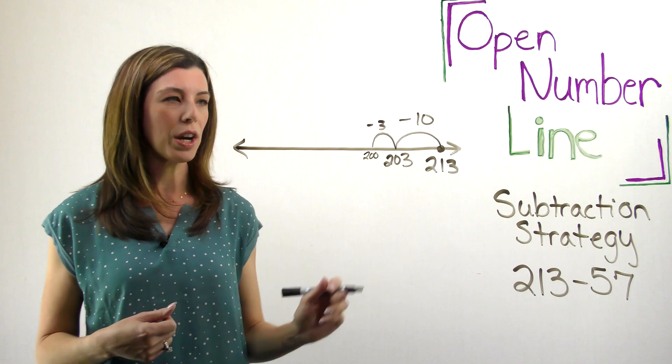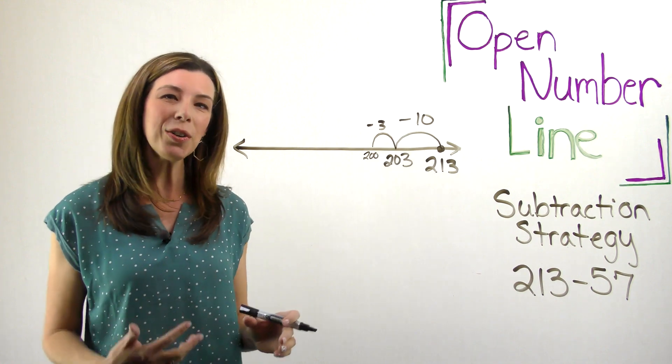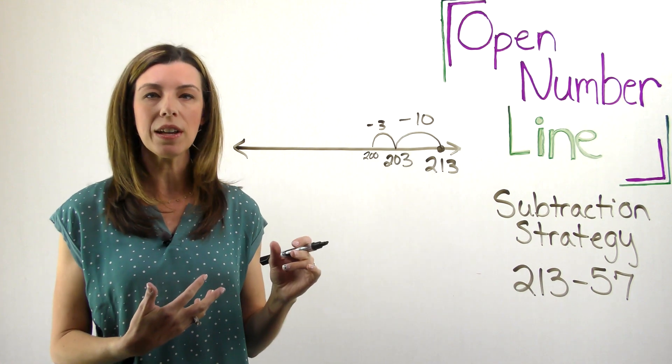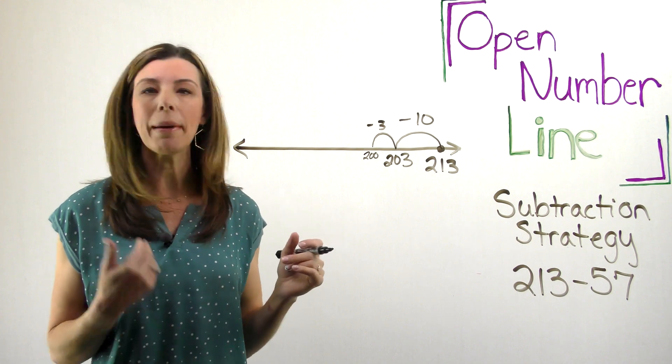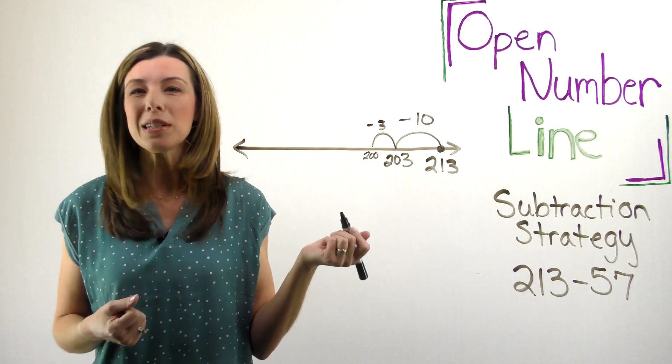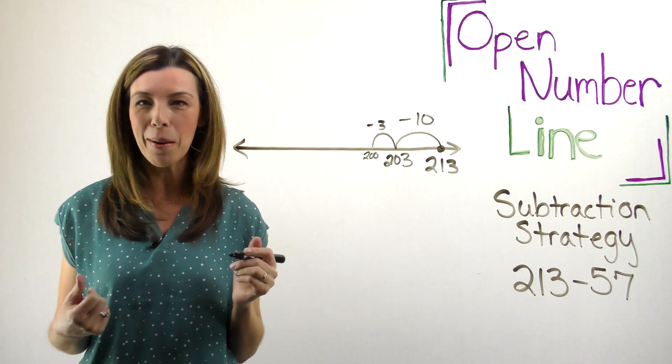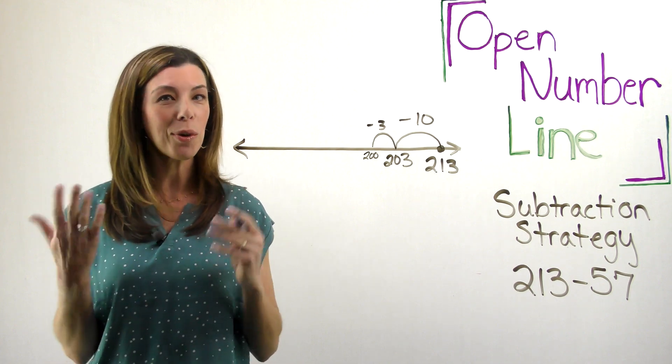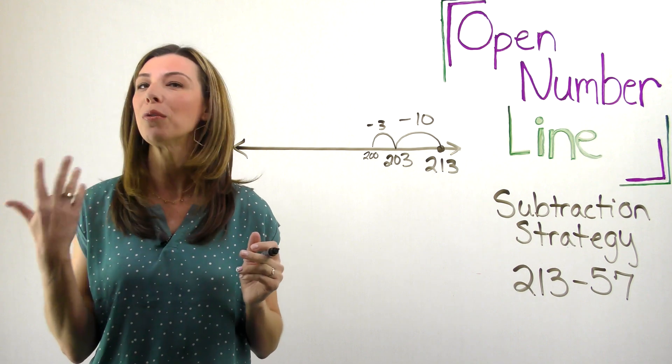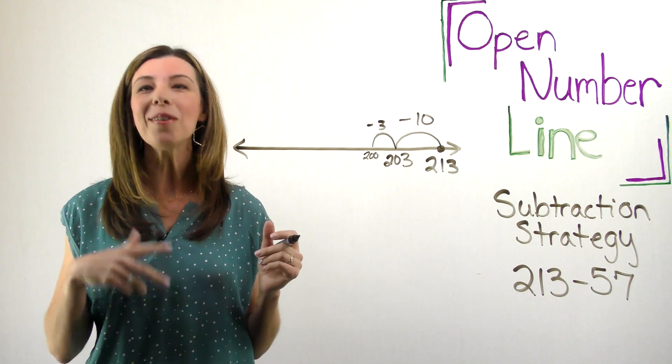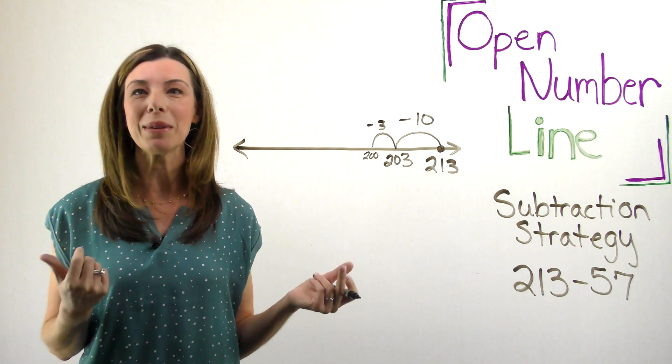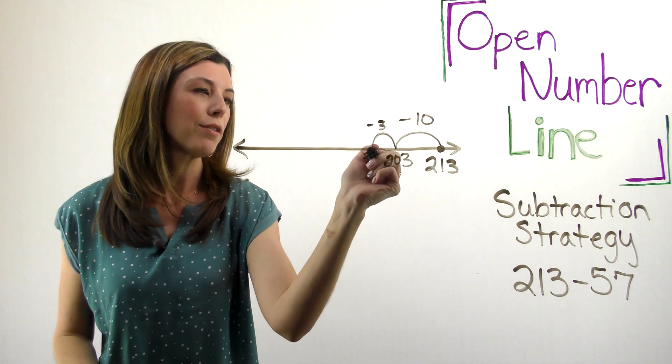I know I need to subtract 57. So right now I'm at 13. I know that I'm not close to 57 yet. So I'm thinking about how I can do that. I can actually subtract 40 from 100 because, again, I know my combinations to 10. So I know that 4 and 6 is 10. Therefore, I know 40 and 60 is 100. Therefore, I know that 140 and 60 would give me 200. So I'm going to subtract 40.